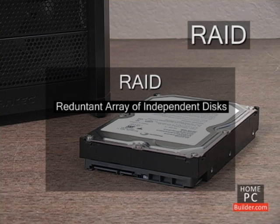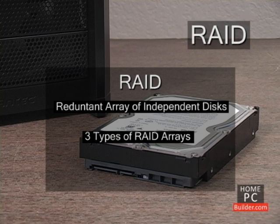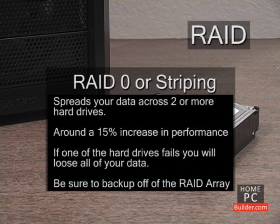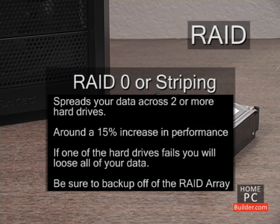There's also a feature on most motherboards called RAID, which allows you to connect two or more hard drives together so they show up as one drive in Windows. There are three kinds of RAID arrays: RAID 0, 1, and 5. RAID 0, sometimes called striping, spreads data across two or more hard drives, giving around a 15% increase in performance. The downside is that if one drive fails, you lose all data — even on the working drives — because a portion of your data was on the failed drive. If you use RAID 0, make sure your important data is backed up off the array.